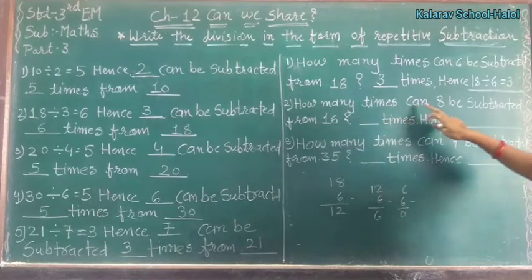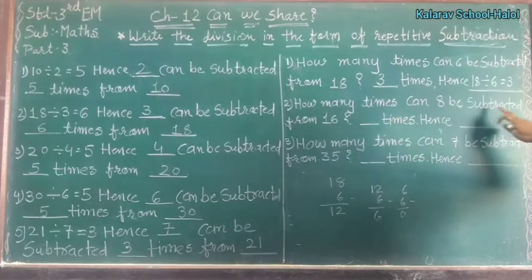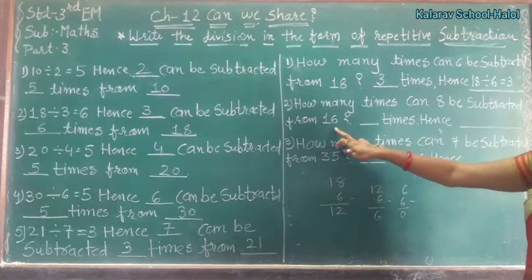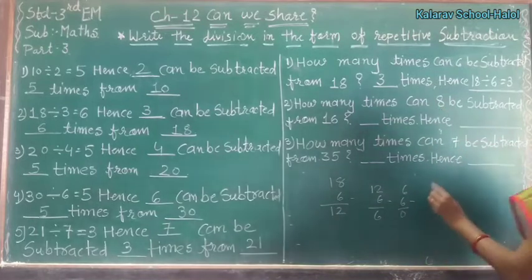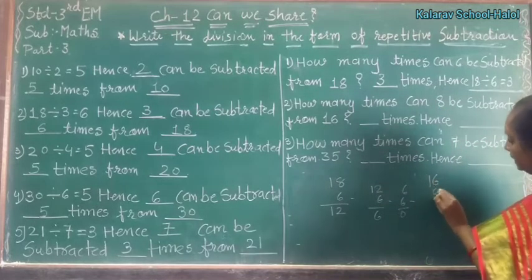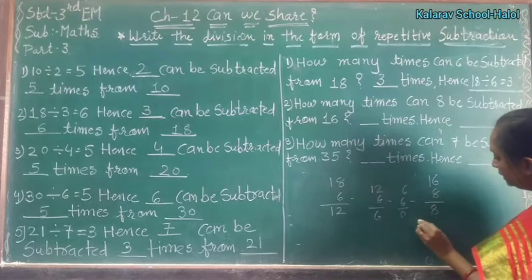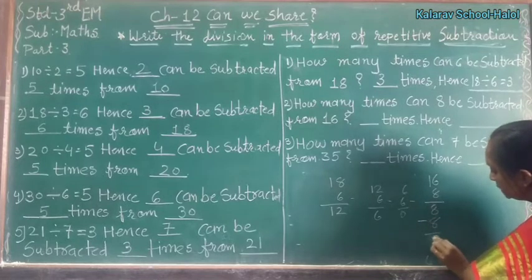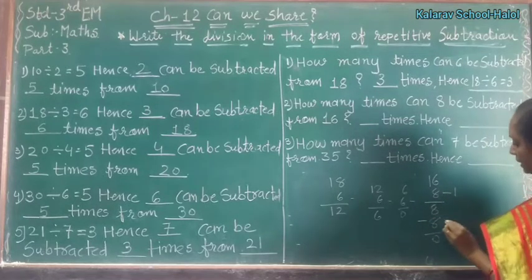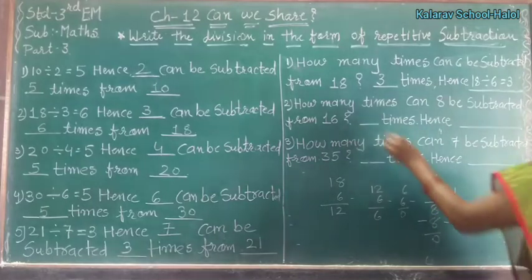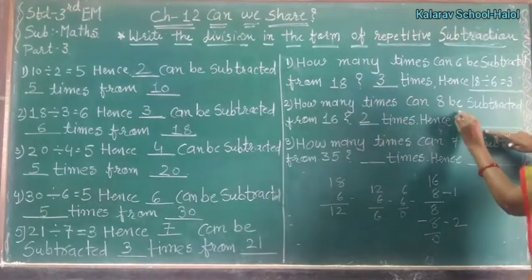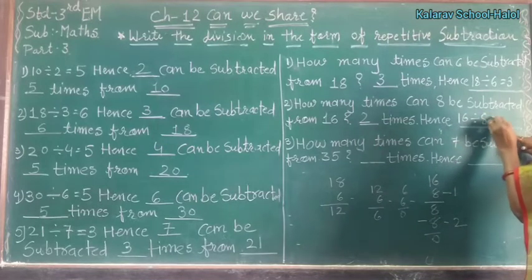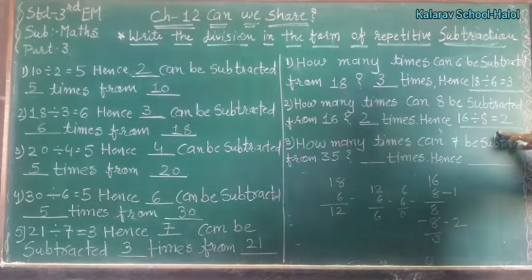Now, how many times can 8 be subtracted from 16? 16 minus 8 is equal to 8, 8 minus 8 is equal to 0. 1 time and 2 times. So here the answer is 2 times. And how to write: 16 divided by 8 is equal to 2.